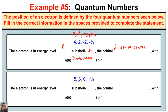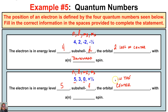In the second sub-example, the quantum numbers given are: n equals five, so the electron is in the fifth principal energy level. l equals three, which represents the f sublevel. m sub l equals zero, so the electron is in the center orbital of the f sublevel box diagram. m sub s equals positive one half, which represents an upward spin.